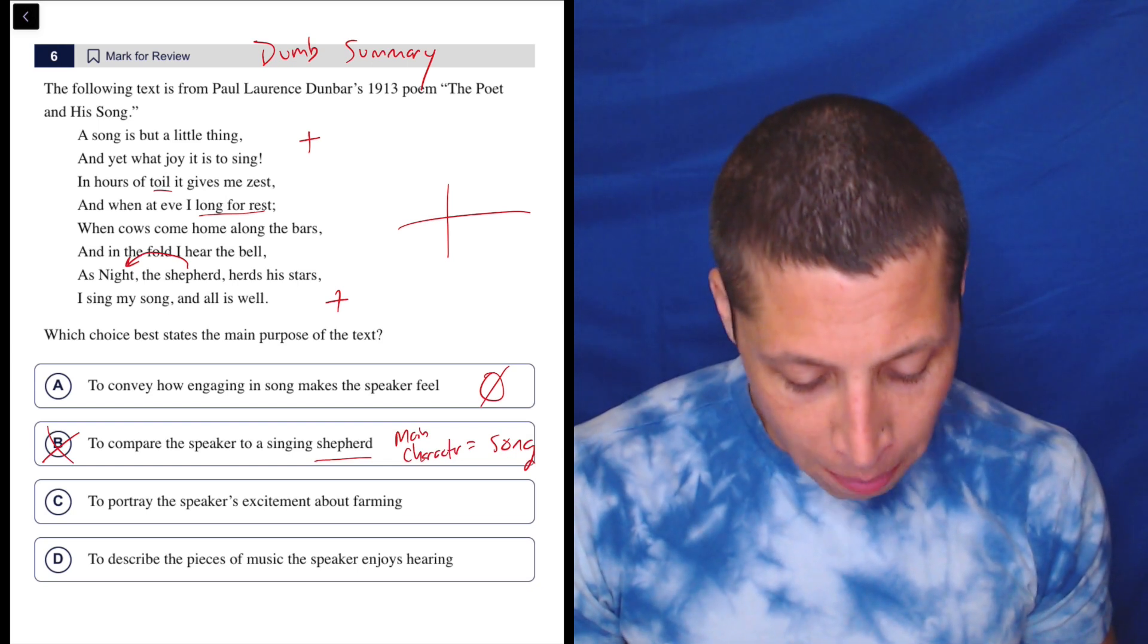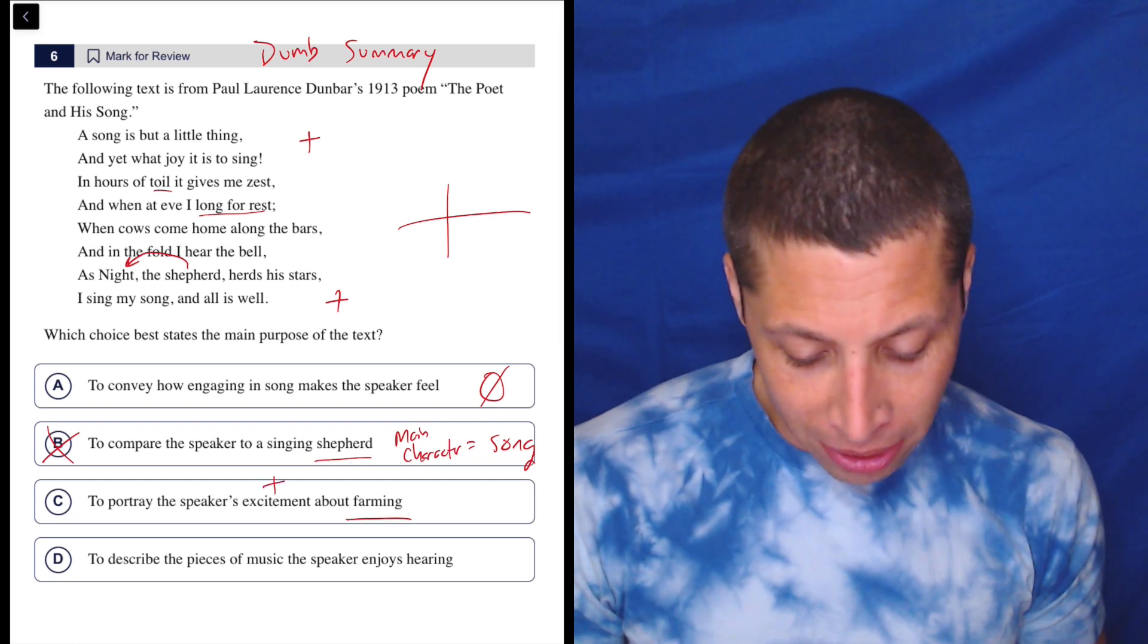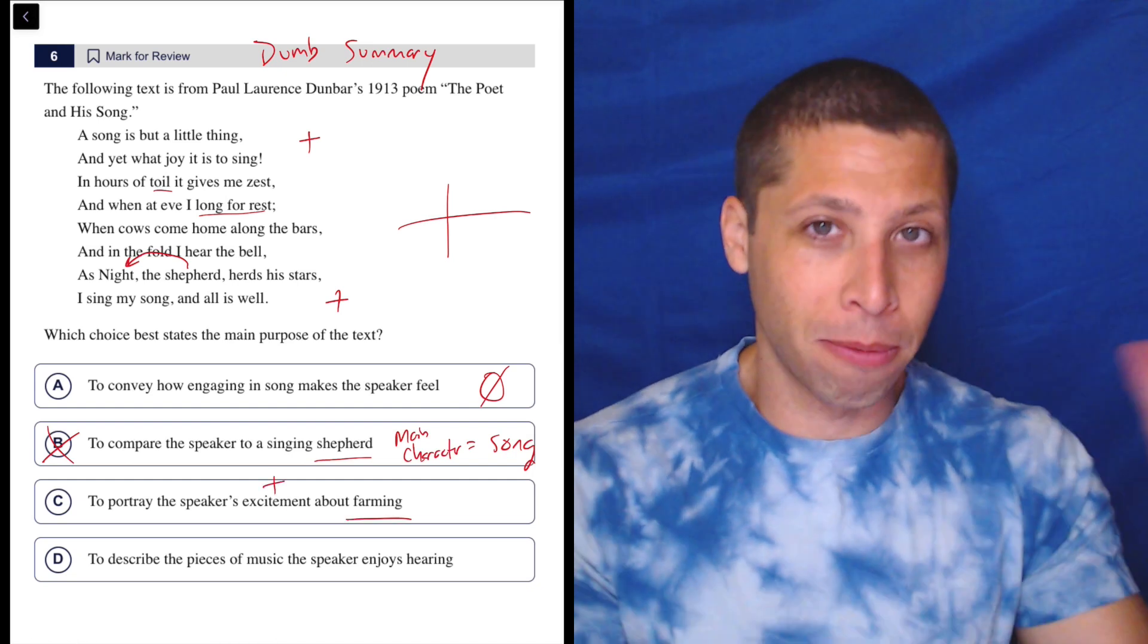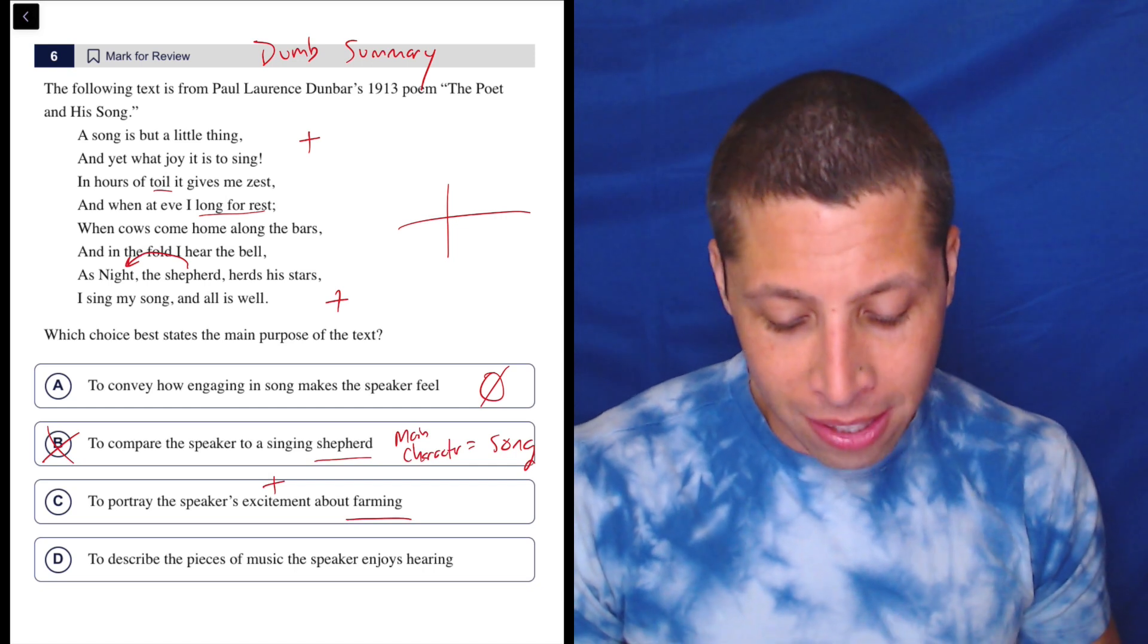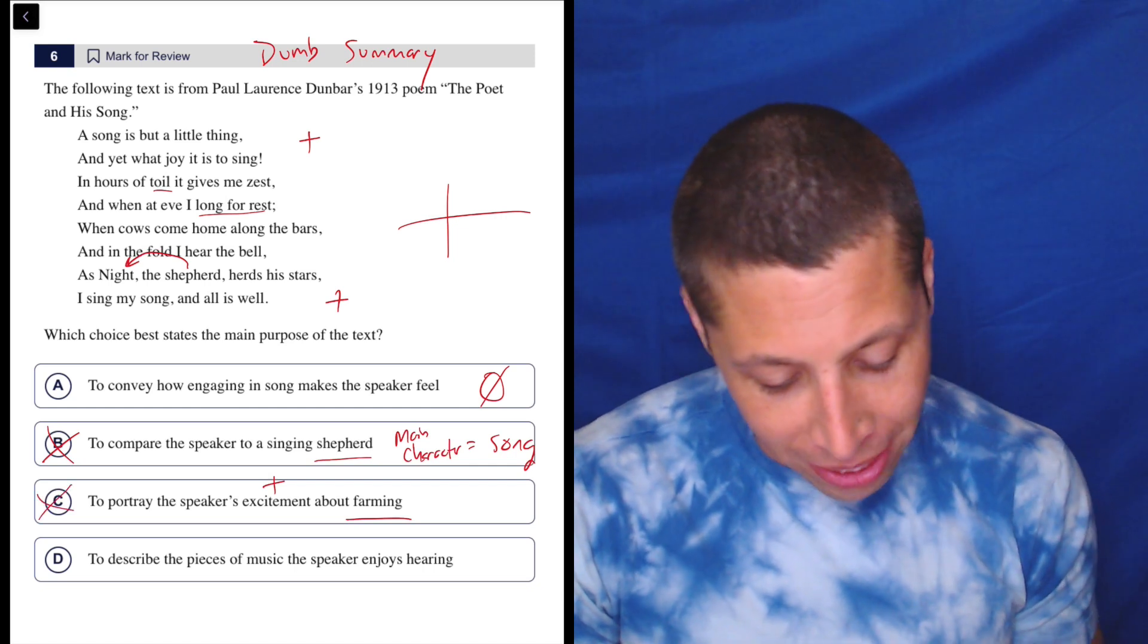C, to portray the speaker's excitement about farming. Well, positive. But farming? We're talking about farming? Again, this is the shepherd thing just kind of blown out of proportion. No, it's about the song, right? It's not about farming. So this is the wrong main character again.